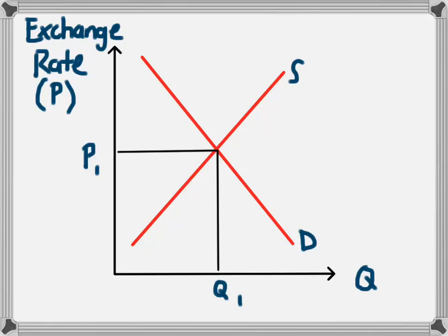The foreign exchange market, or Forex market, is just like any other market where there is a product which is being bought and sold. And just like any other product, if the price of that product is really high, people won't want to purchase it and there will be a low demand for it. As the price of that commodity falls, people will demand more of it.